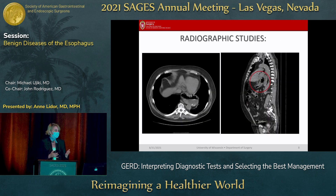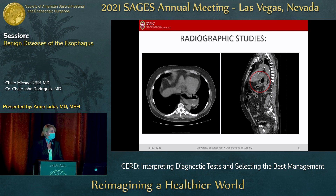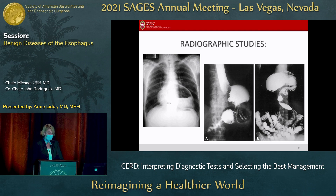Moving on to radiographic studies: CT scans are not used that often for typical reflux patients, although patients with paraesophageal hernias often present to the emergency room with chest pain and may already have a CT scan. If I think a patient has a large type IV paraesophageal hernia, I'll sometimes order a CT scan to see what other organs are in the chest for operative planning, but it's not a routine study for straightforward GERD patients. We have the classic air-fluid level behind the heart. In our practice, we are moving to using syneesophagrams.